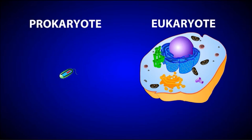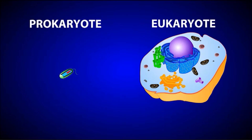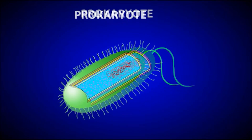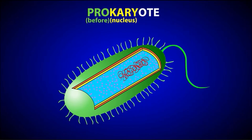Prokaryotic cells are much smaller than eukaryotic cells and have a simpler structure, which actually allows them to reproduce very quickly and effectively. Prokaryotic cells lack a nucleus. The name gives a hint: 'karyon' means kernel or nucleus, and 'pro' means before — so prokaryote literally means 'before nucleus.'